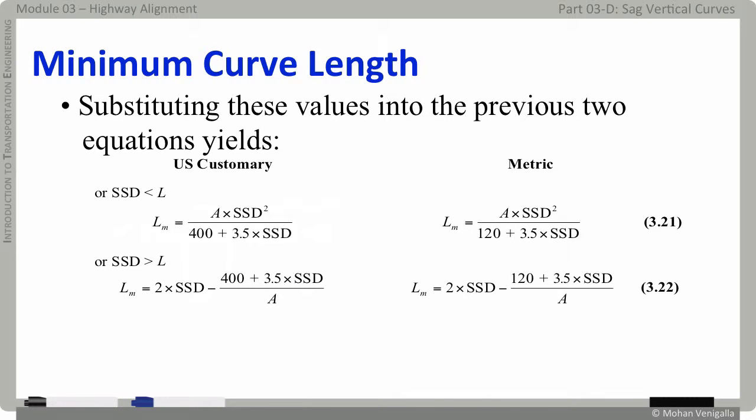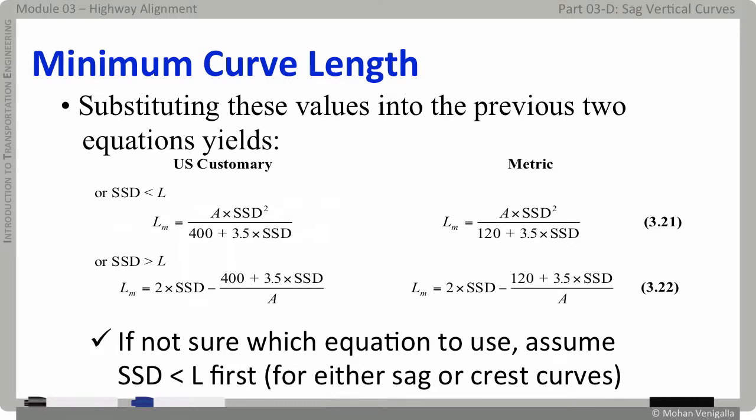Substituting two feet for h and one degree for beta, the equations then become these two simplified forms. As in the case of crest curves, if you are not sure whether SSD is less than or greater than L, start with an assumption — say SSD is less than L — solve for L using the first formula. If you turn out to be wrong, use the other formula, and in one of the cases you'll be right.